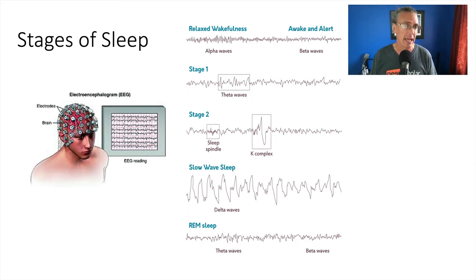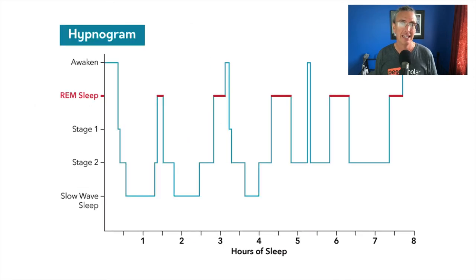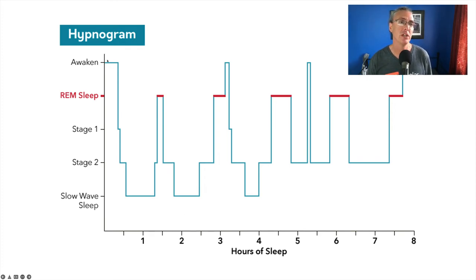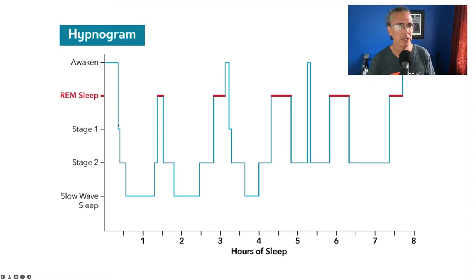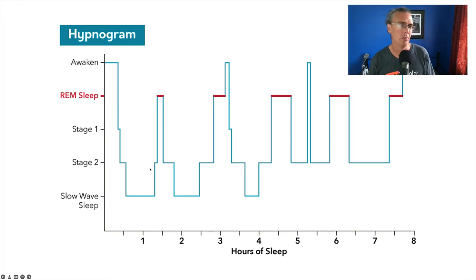Thanks to the EEG, we can watch the brain move from stage to stage as a person sleeps. These cycles happen repeatedly through the night. Someone originally awake goes down to stage one, then stage two, then deep sleep. From deep sleep they come back up — possibly through stage two again — and then enter a dream state, spending a while there. That's roughly an hour and a half to get through those stages.